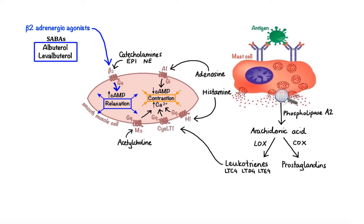We also have the long-acting beta-2 agonists, abbreviated LABAs, which produce bronchodilation for about 12 hours. Examples of drugs that belong to this group are arformoterol, formoterol, vilanterol, and salmeterol.